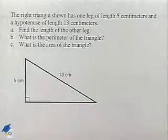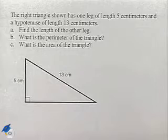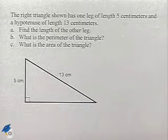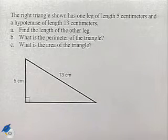Now here's a problem dealing with a right triangle. The right triangle shown has one leg of length 5 centimeters and a hypotenuse of length 13 centimeters.